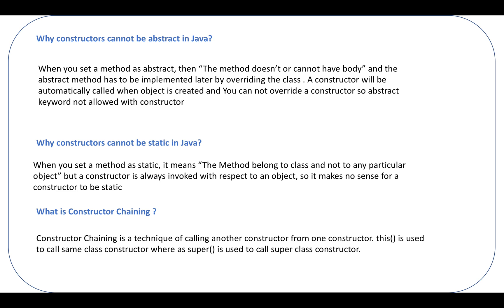Why can constructors not be abstract in Java? When you set a method as abstract, the method cannot have a body — an abstract method doesn't have an implementation or body itself. An abstract method has to be implemented in a later phase by overriding it in a child class. A constructor will be automatically called when an object is being created, and you cannot override a constructor, so the abstract keyword is not allowed for a constructor.